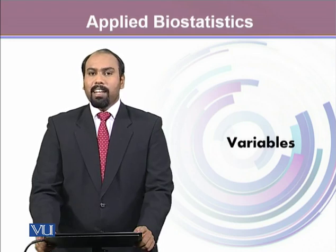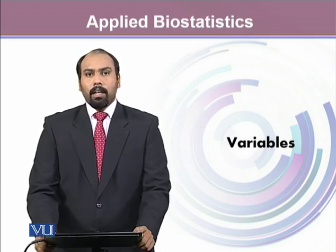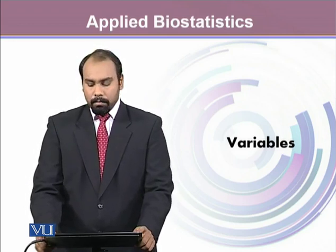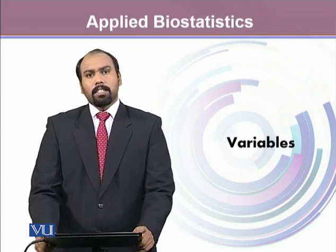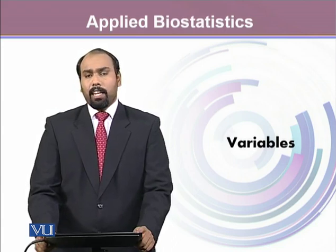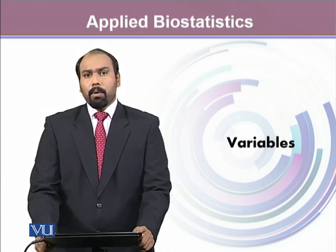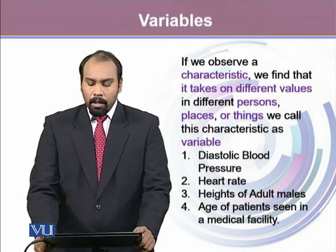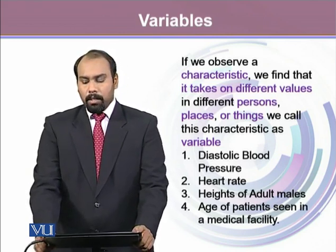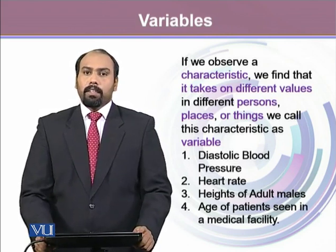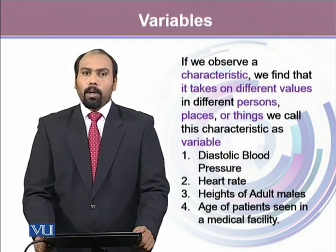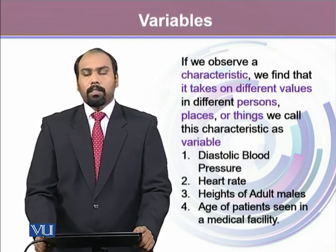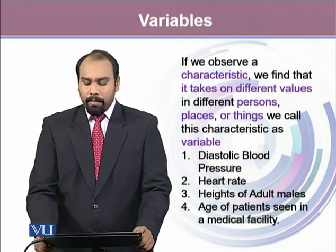Data comprises a lot of different information and we call such information as variables, or constants as well. But since in statistics we are more interested in hunting out the variations, we want to look at the variables. If we observe a characteristic, we find it takes different values. Any characteristic that varies across individuals or a population of interest is called a variable.